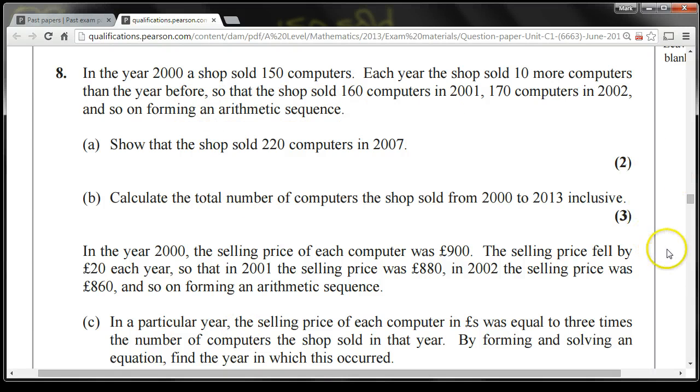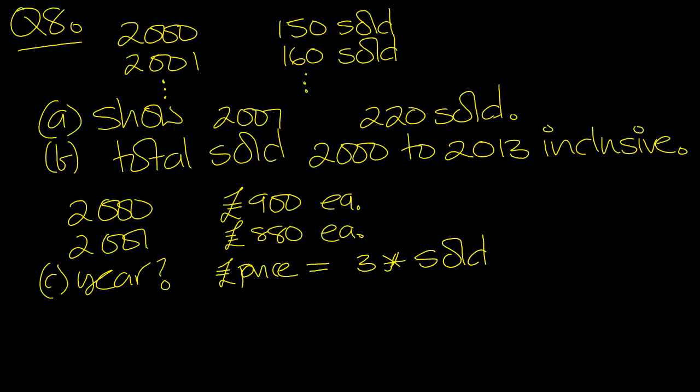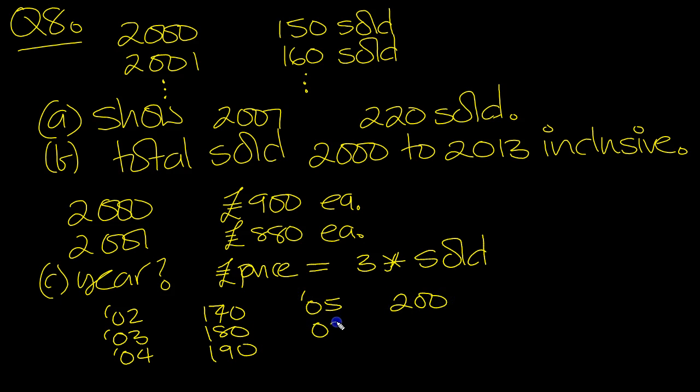Here's the question. So 2007 showed there were 220 sold. In 2002 there were 170, 2003 there was 180, 2004 there was 190, 2005 there was 200, 2006 there was 210, and 2007 there was 220.